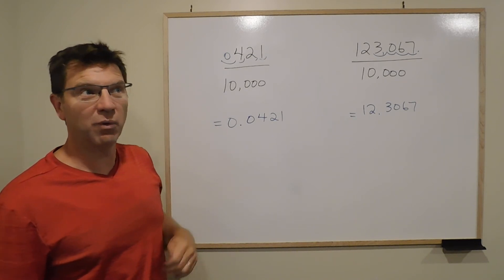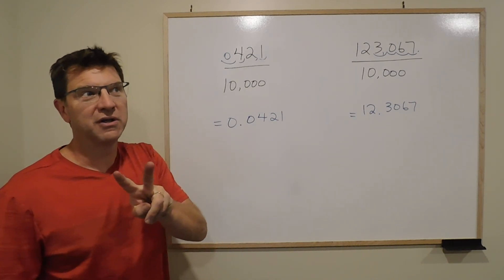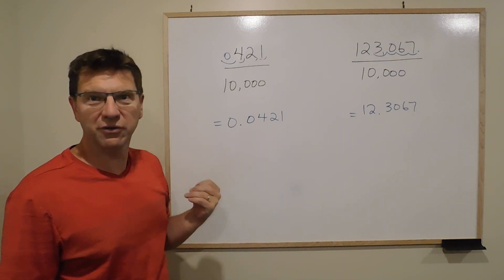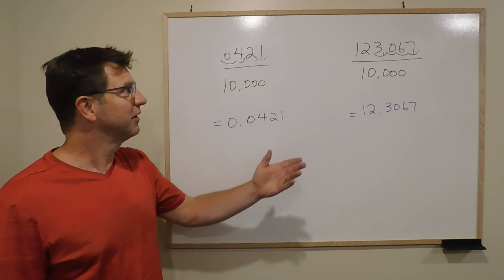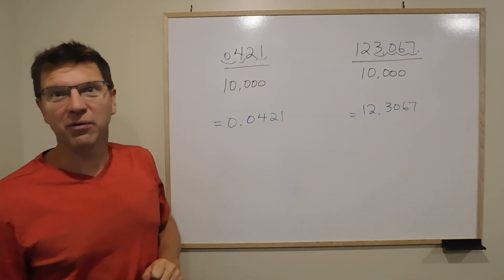If you were to divide by, say, 100, there's two zeros, you would move it to the left by two spots. Number of zeros is how far your decimal will move.